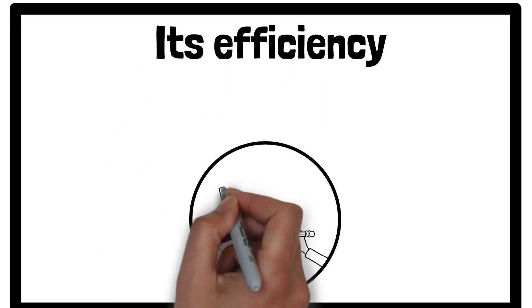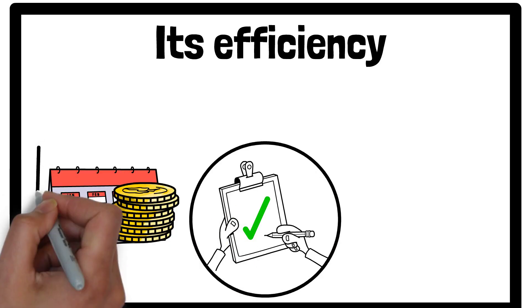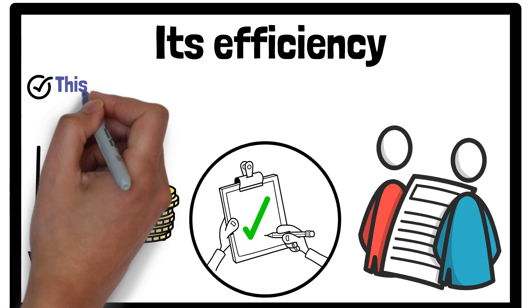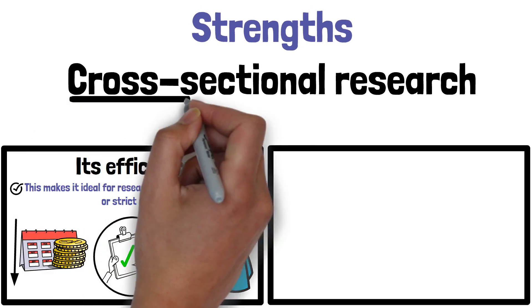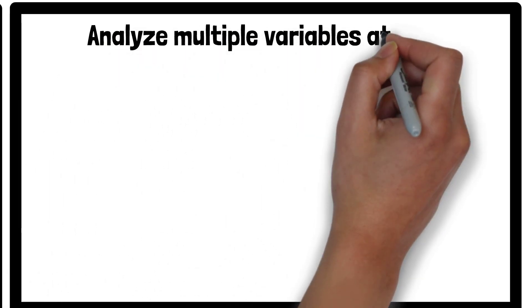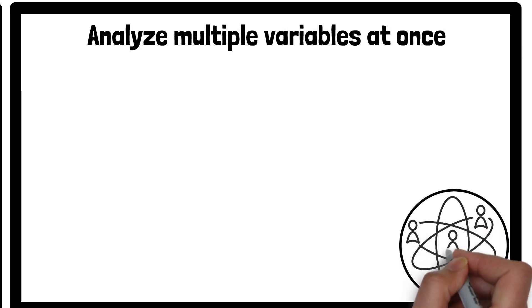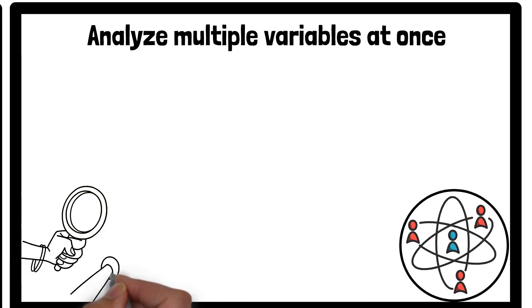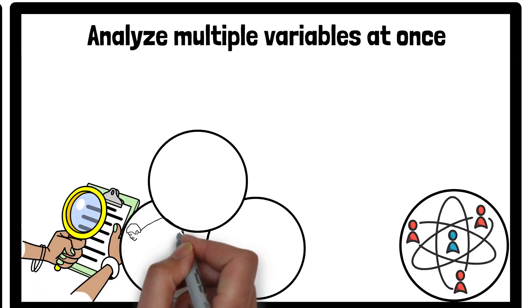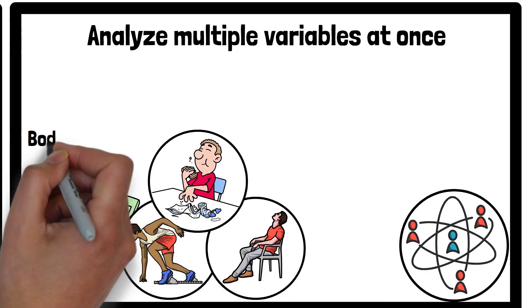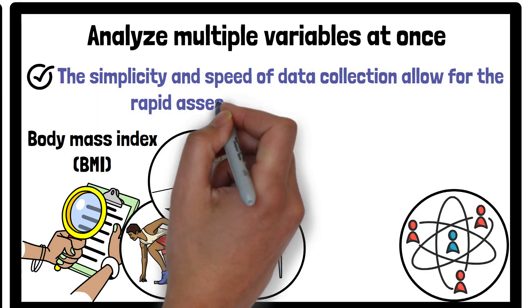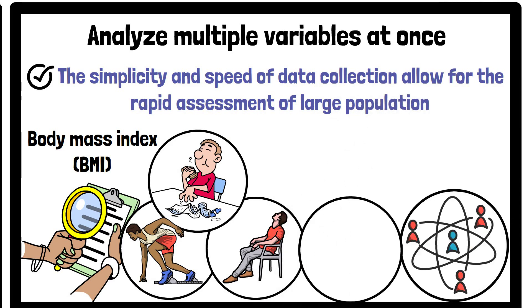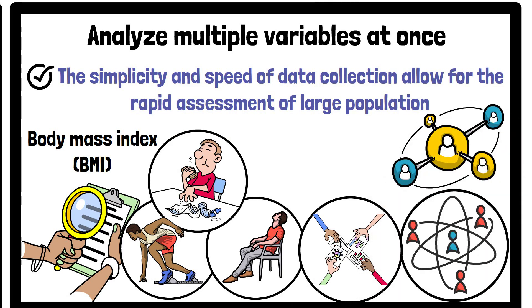One significant strength of cross-sectional research is its efficiency, because data is collected only once. The time and resources needed are considerably less than in studies that follow participants over time, making it ideal for researchers with limited budgets or strict deadlines. Additionally, cross-sectional studies can be used to analyse multiple variables at once. For instance, a study might simultaneously examine the connection between physical activity, diet, and sleep habits in relation to body mass index. The simplicity and speed of data collection allow for the rapid assessment of large populations, making it easier to spot immediate trends and form hypotheses for further investigation.